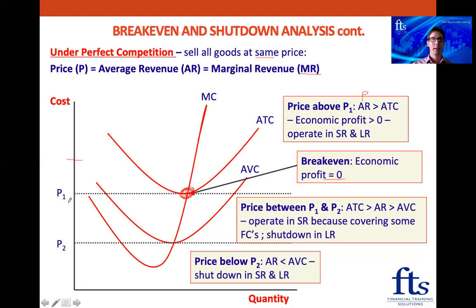What happens if the price is between P1 and P2? The average total cost is above the average revenue because the price is down here and costs are above it. But at least the price — the average revenue — is above average variable costs. So because we're covering some of the fixed costs, we operate in the short run but will shut down in the long run.